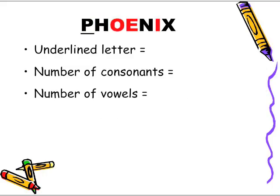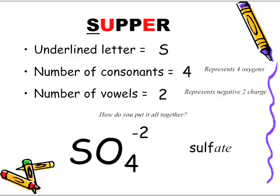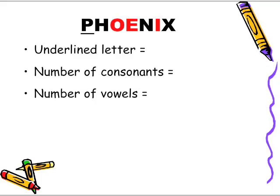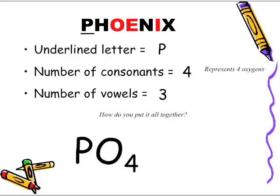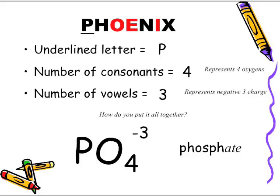And lastly, phoenix — please, it's very important that you know how to spell the word phoenix. Same thing goes with supper — don't forget that extra P. Phoenix: underlying letter is P. Number of consonants: four. Number of vowels: three. So how do we put it all together? Start off with P. Four consonants means four oxygens, so PO4. Three vowels means three negative charges — negative three. It's the derivative of phosphorus, and because there's oxygen present, we call that phosphate.